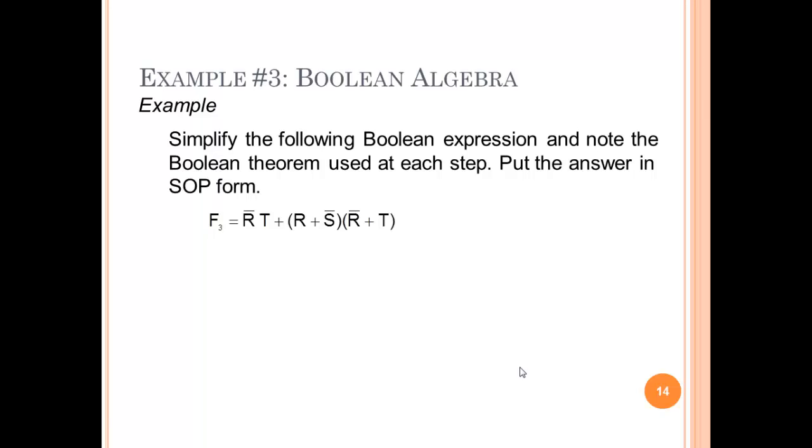So here's an example. And it says to put the answer in sum of products form. So we have NOT R AND (T OR (R OR NOT S)) AND (NOT R OR T). So what do we need to do with this term? The best thing to do with this term is to go ahead and distribute this out.